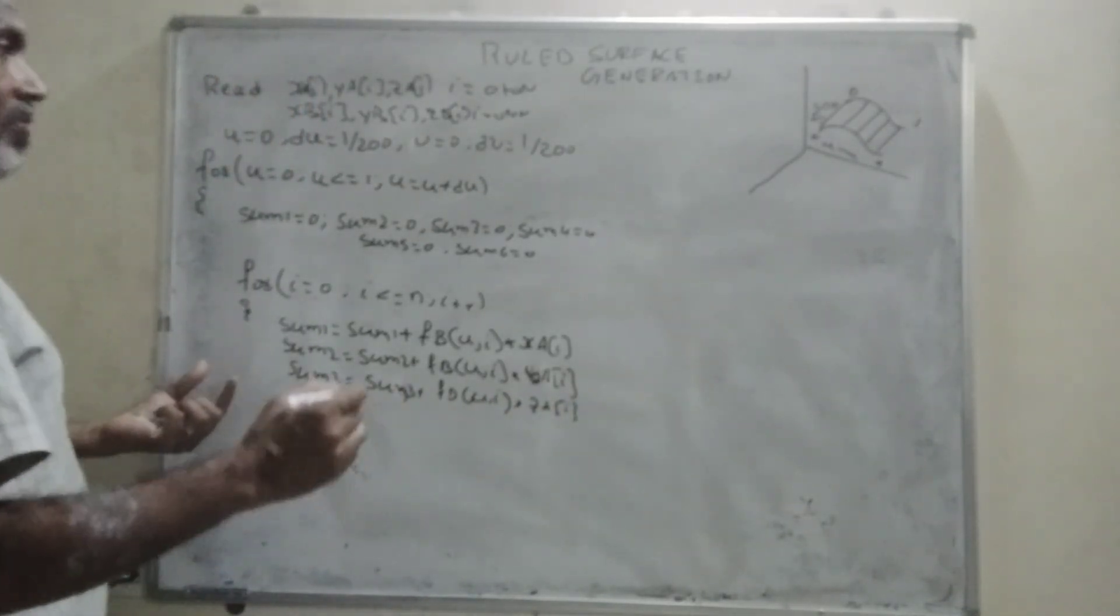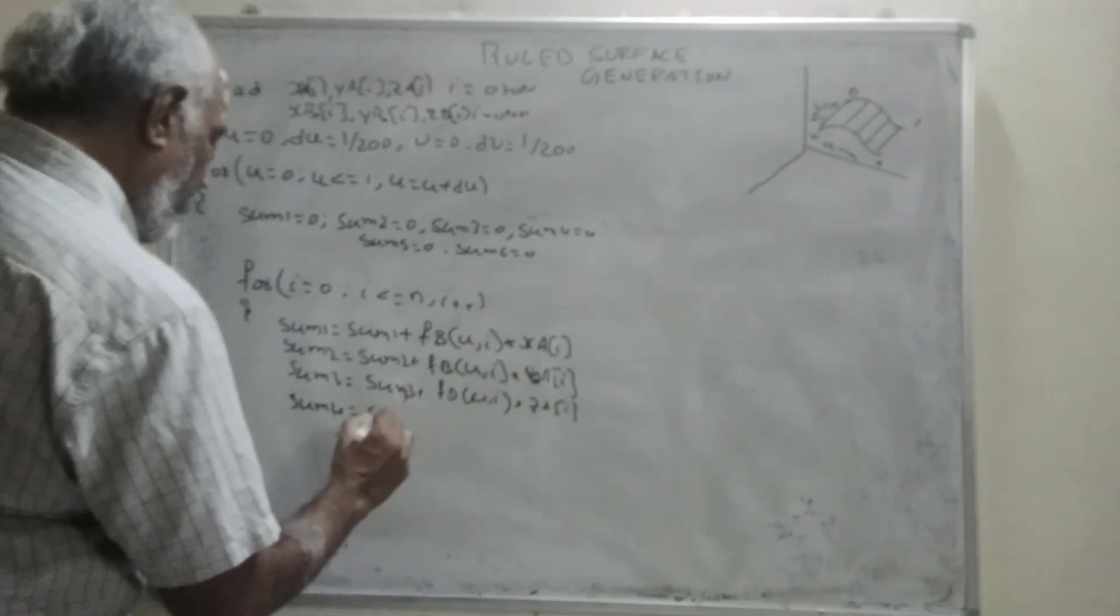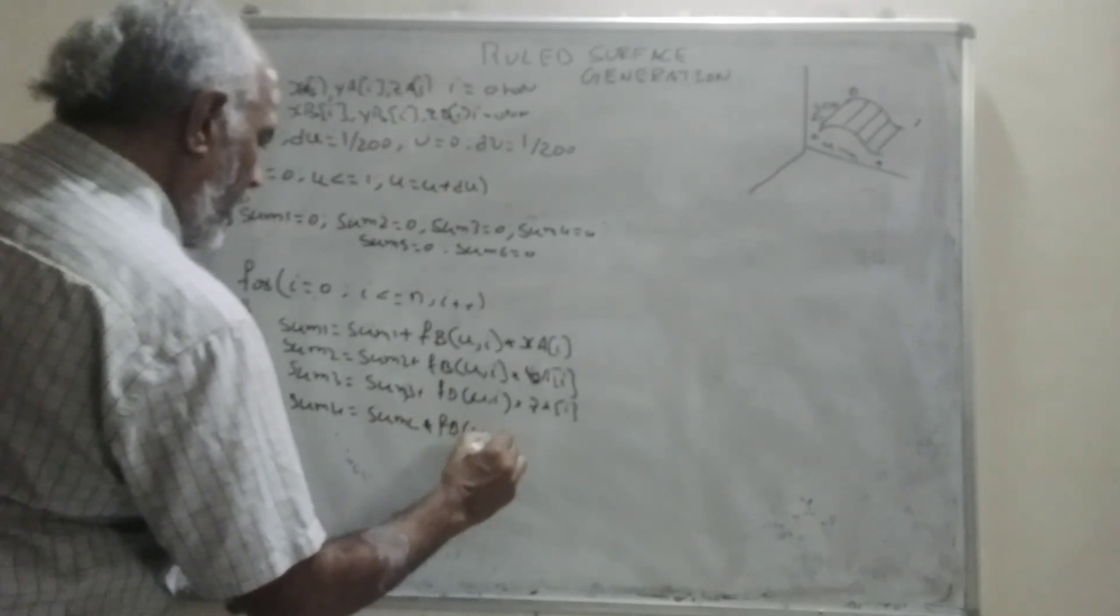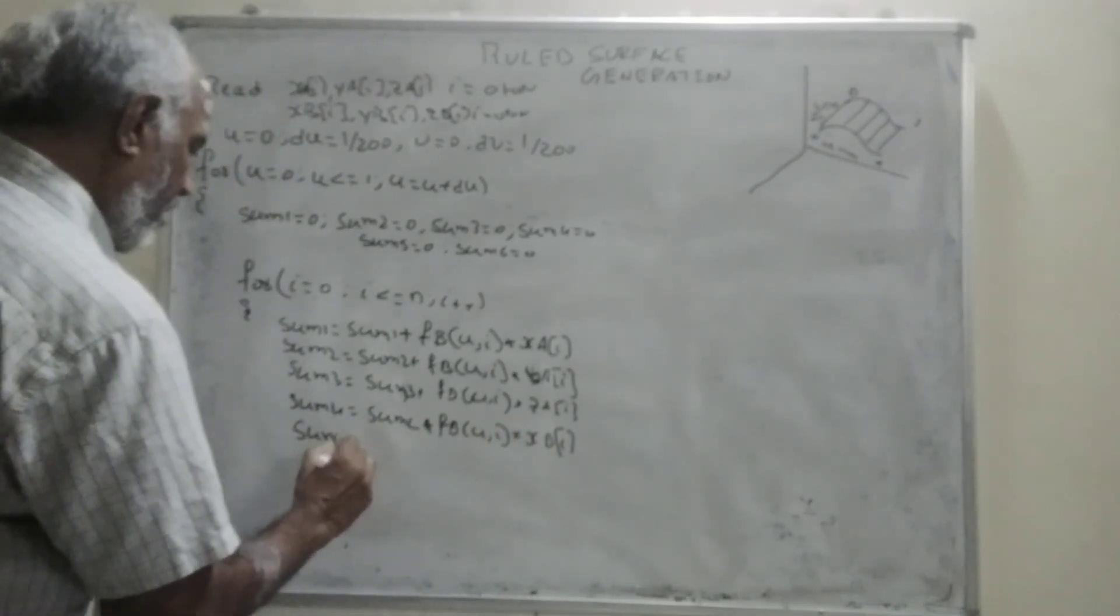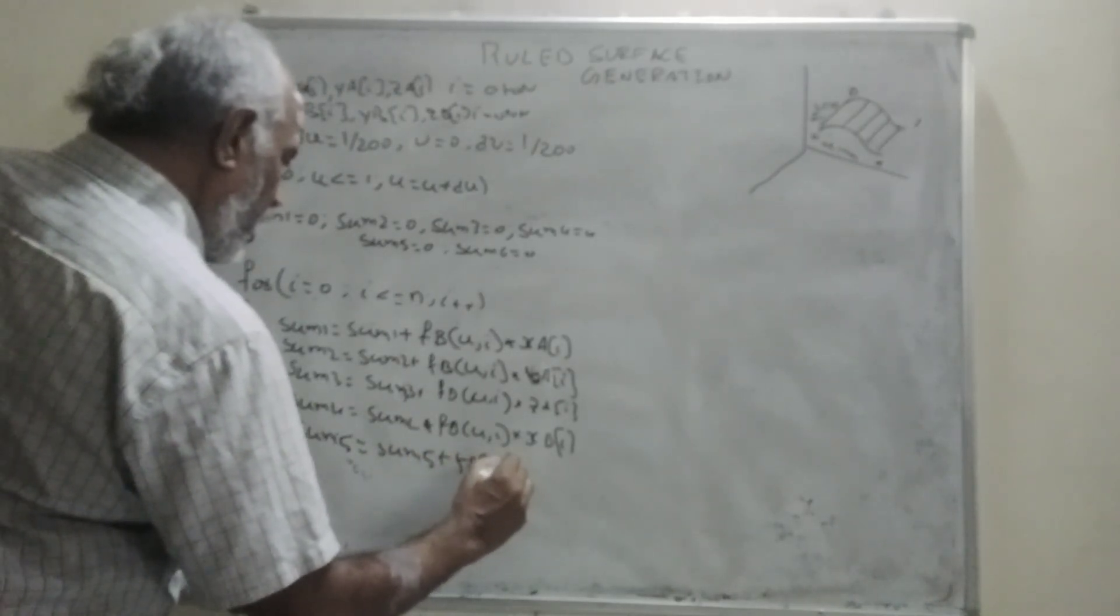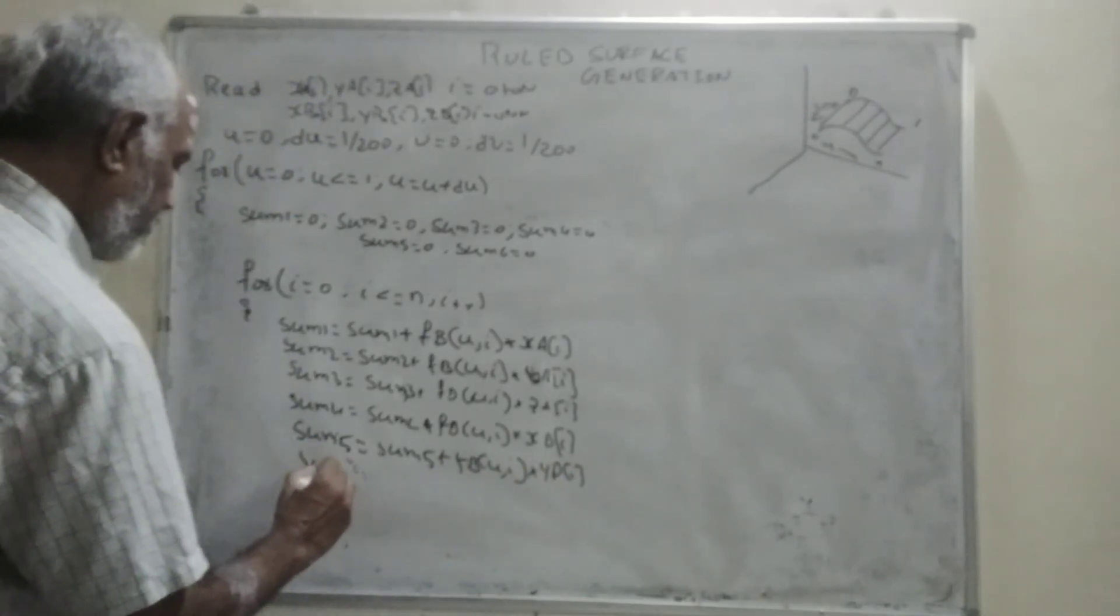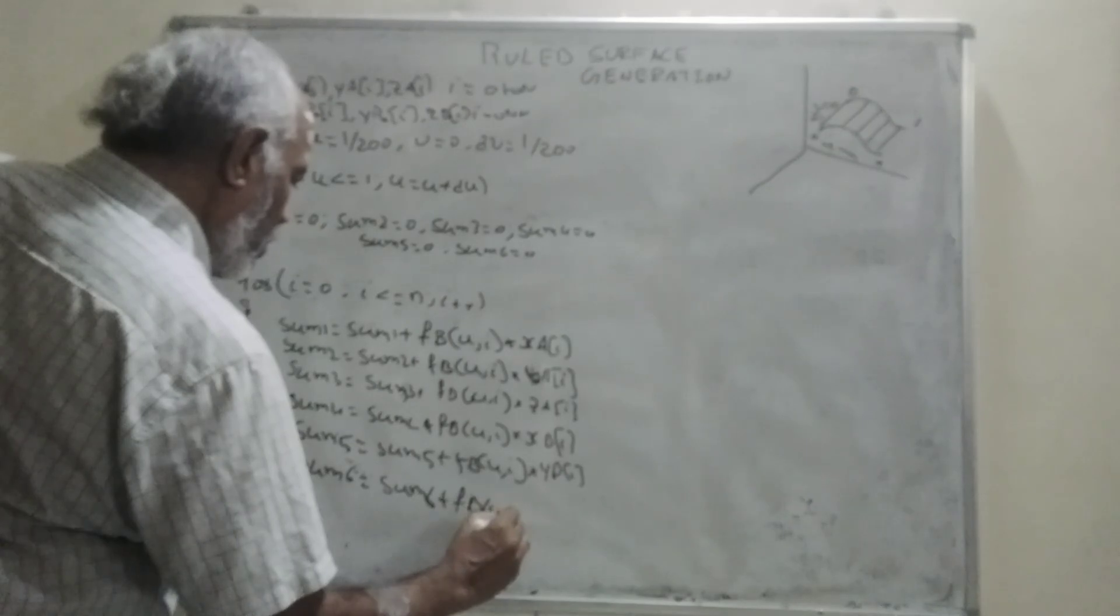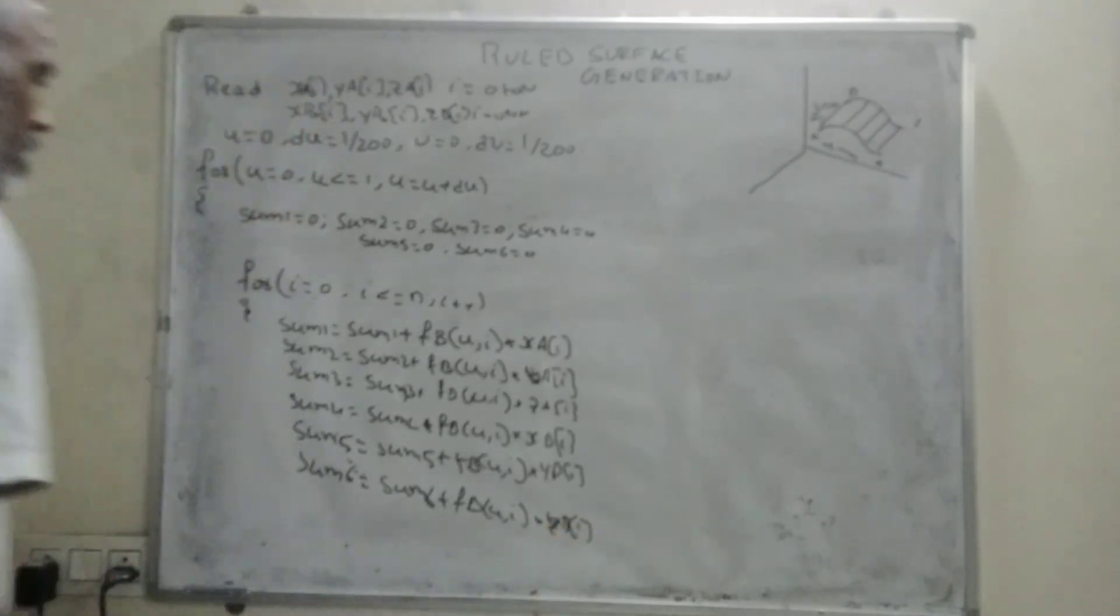For one point, I am taking x_b_i. Similarly, sum4 equals sum4 plus f_b into u i into x_b_i. Sum5 equals sum5 plus f_b into u i into y_b_i. Sum6 equals sum6 plus f_b u i into z_b_i.